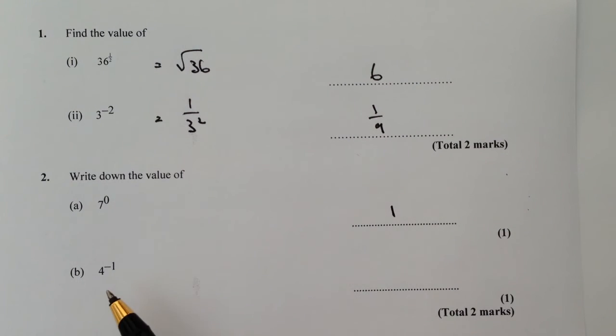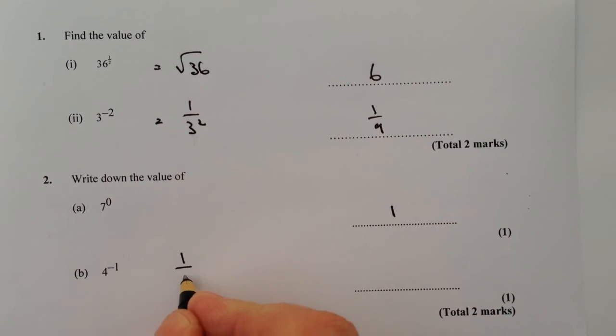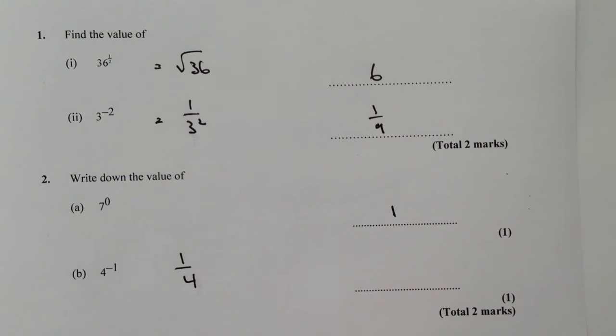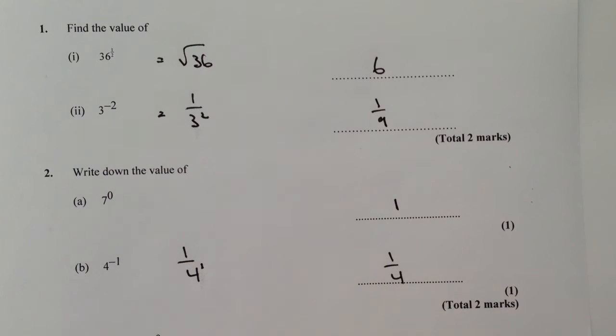Next one is, as I mentioned before, wherever you see a negative number it means the reciprocal, so we can write that as 1 over 4. So the answer to that is, if you like, 1 over 4 to the power of 1, so that's the same as saying 1 quarter.